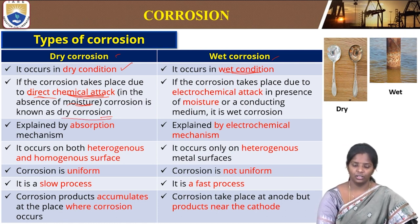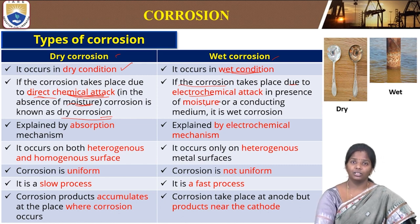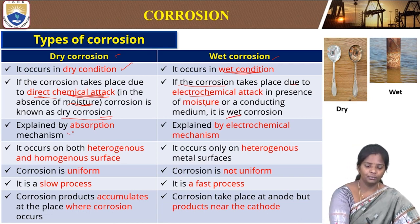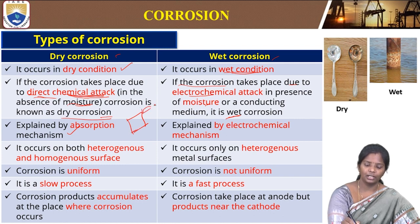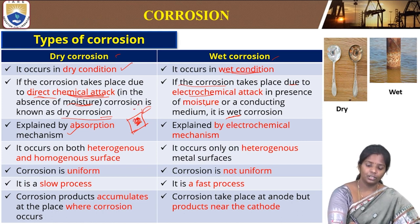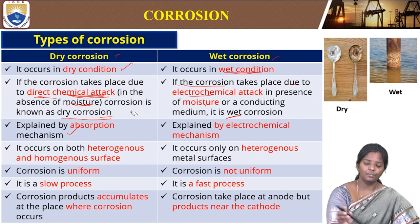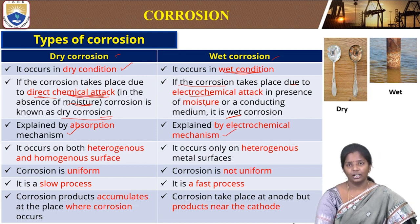Wet corrosion occurs in the presence of moisture. If the corrosion takes place due to electrochemical attack in the presence of moisture or a conducting medium, then it is wet corrosion. Dry corrosion is explained by absorption — there is some chemical that is going and absorbing on the metal, and this absorption will cause corrosion. The mechanism all depends on the absorption capacity of that metal. Wet corrosion is explained by electrochemical mechanism.